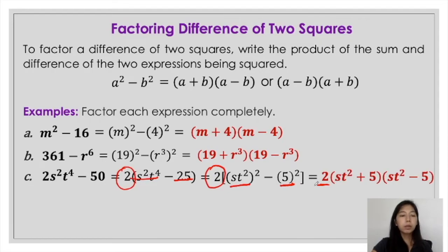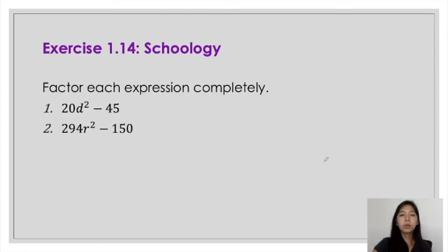So therefore, the factors of 2s squared t raised to 4 minus 50 is actually this whole thing here.